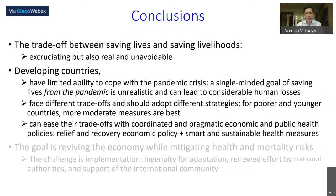In conclusion, the trade-off between saving lives and saving livelihoods is difficult, excruciating, but also real and unavoidable. Developing countries have limited ability to cope with the pandemic crisis. Therefore, a single-minded goal of saving lives just from the pandemic is unrealistic and can lead to considerable human losses. Developing countries face different trade-offs and should adopt different strategies. For instance, for poorer and younger countries, more moderate measures are best, and developing countries can ease their trade-offs with coordinated and pragmatic economic and public health policies.